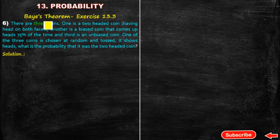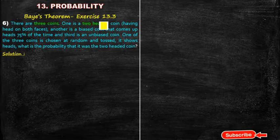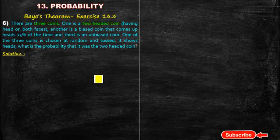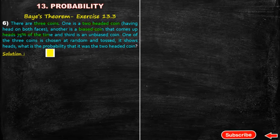There are 3 coins. One is a two-headed coin — meaning both sides of the coin are heads, so whether it lands up or down, it will always show a head. Another coin is a biased coin that comes up heads 75% of the time.